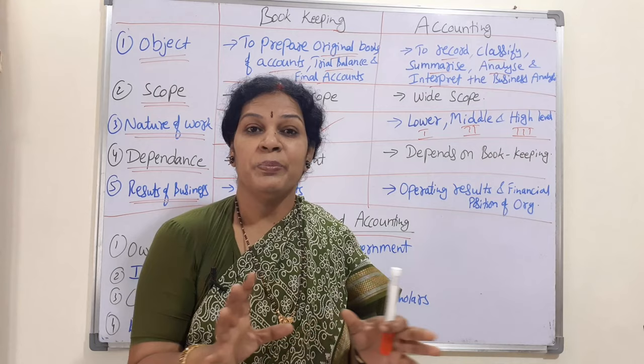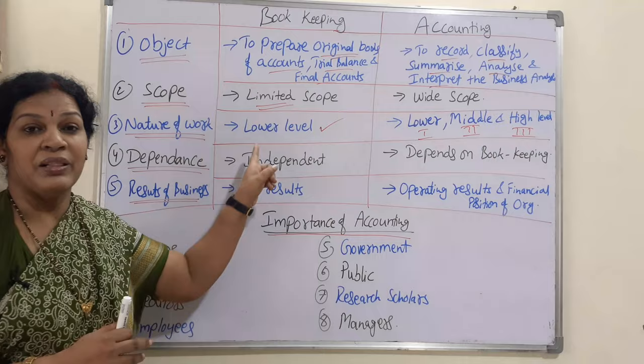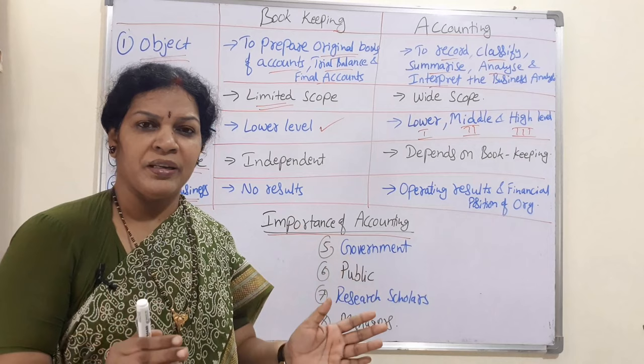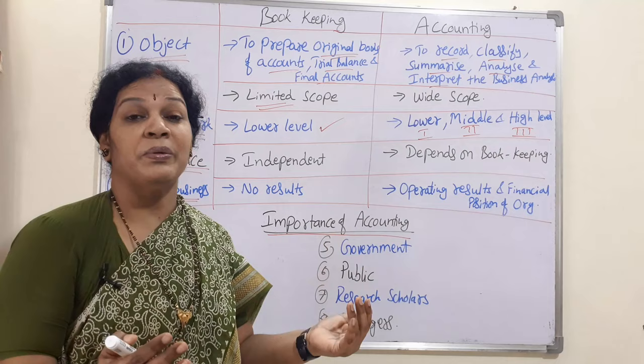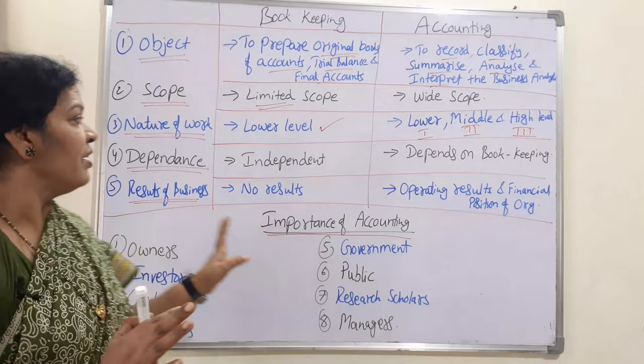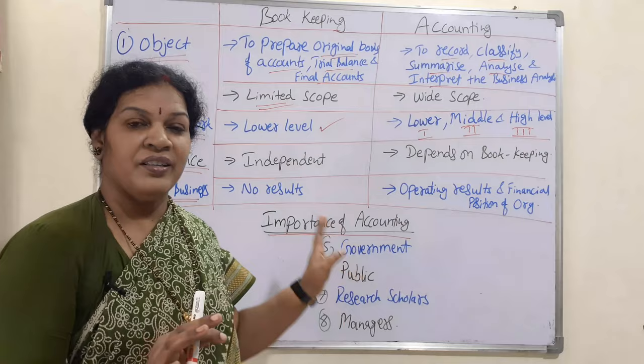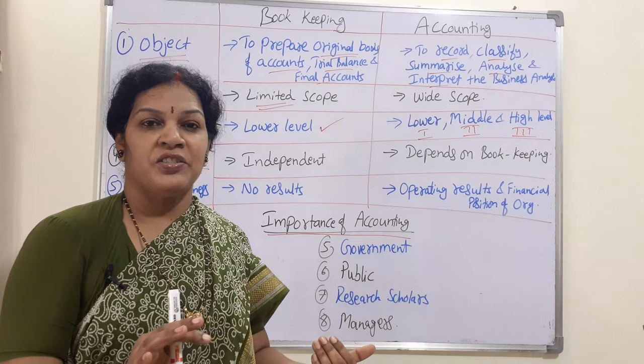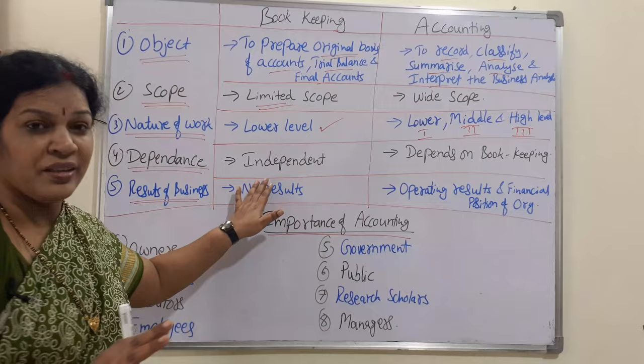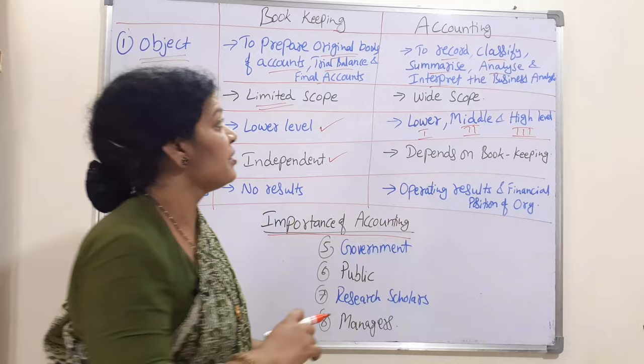In bookkeeping, there is only one level — lower-level clerical work. They need not think about preparing reports, submitting reports, advising, or interpreting — none of that is required. Now, coming to dependence: bookkeeping is independent. They only record transactions and maintain the basics of accounting, not depending on anyone.